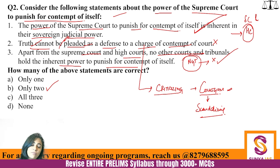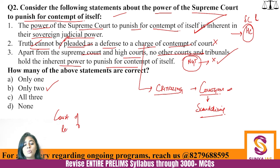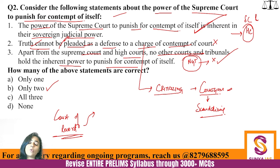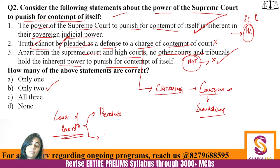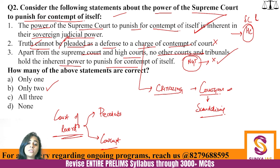Also note: the power to punish for contempt is also a part of the Supreme Court being a court of record, which is mentioned in the Constitution. Being a court of record means two things: first, any judgment or remark of the Supreme Court is taken as a precedent and respected for further judgments; and second, the Supreme Court can punish for its contempt. Both these things together define 'court of record.'